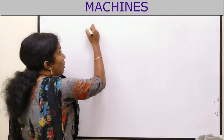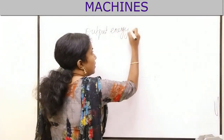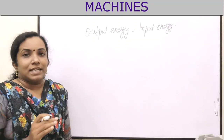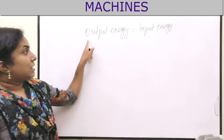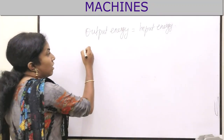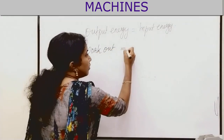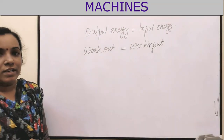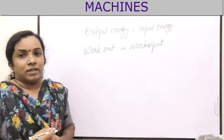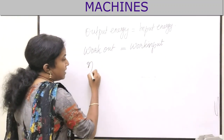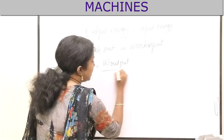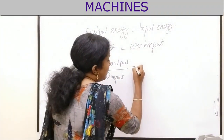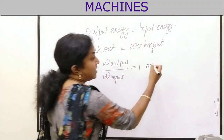In an ideal machine, output energy is equal to input energy since there is no loss of energy. Hence, work output will be equal to work input. So in an ideal machine, work output equals work input. Efficiency is work output divided by work input. Since work output equals work input, the efficiency of this machine will be equal to 1, or in percentage, it is 100%.